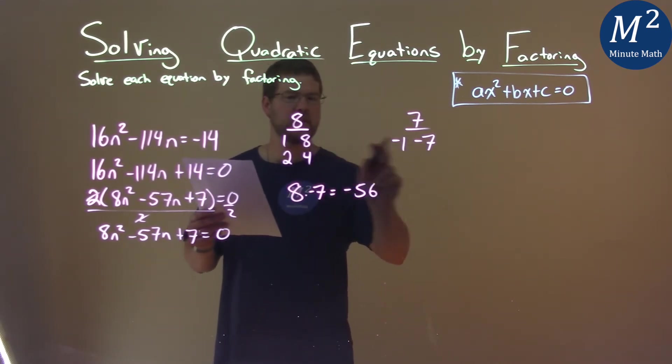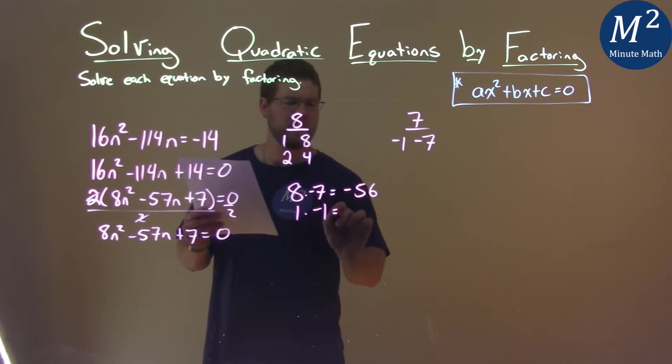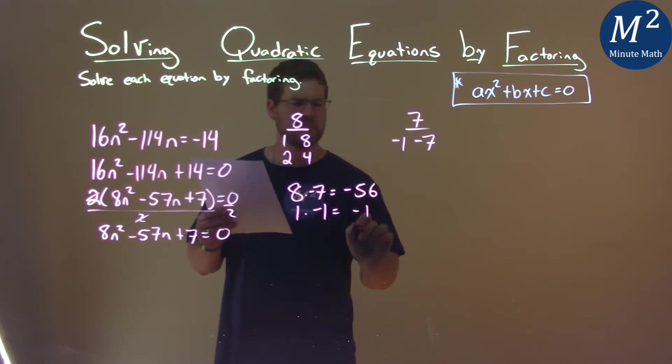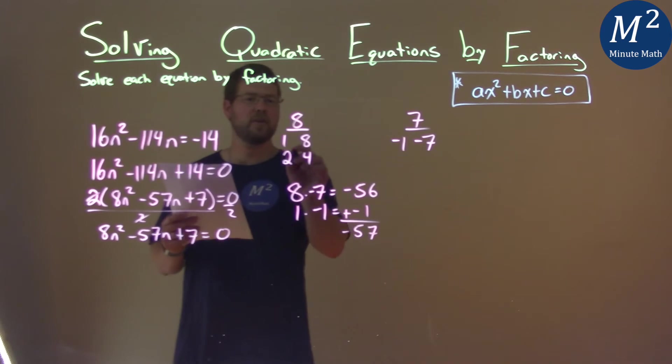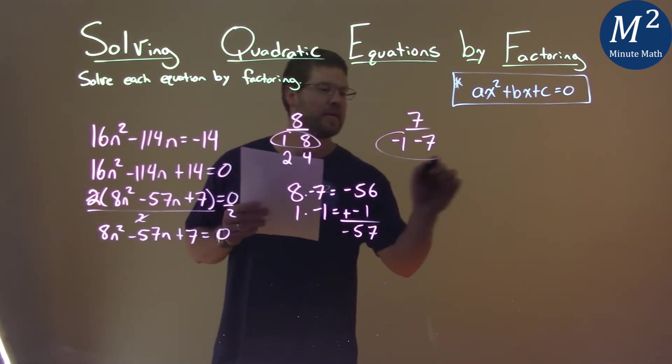So that's one pair. The other pair would be 1 times negative 1, and that's negative 1. Add them together, negative 57, the b value that we're looking for. So the pairs we're dealing with are here and here.